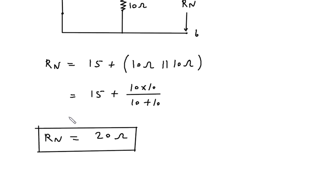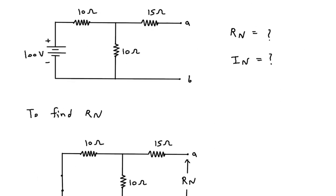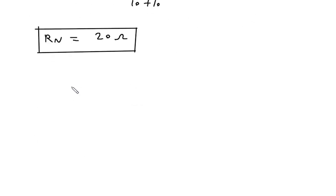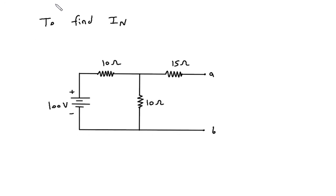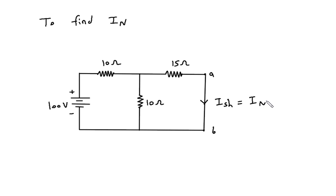Next, we have to find In. To find In, we have to short circuit terminal A and B. This will be our short circuit current Ish, and it is equal to In.